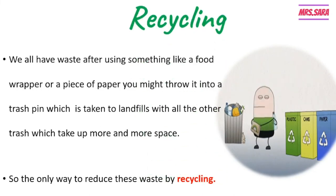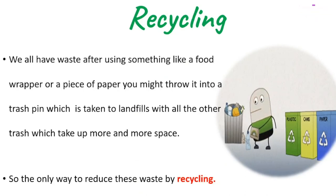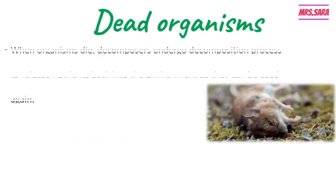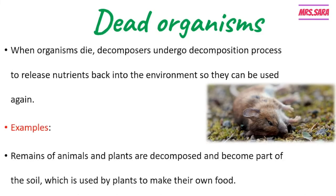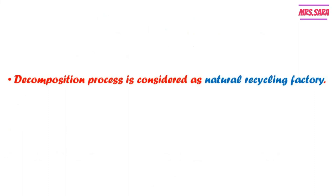What is the meaning of recycling, Primary Five? Recycling is to use or reuse waste material again. When any organism dies, decomposers do their job in the process of decomposition to release the nutrients back to the environment or ecosystem so they can be used again — this is natural recycling. The remains of animals and plants are decomposed by the decomposers and become part of the soil as nutrients, which are then used by plants to make their food. So the decomposition process is considered a natural recycling factory.